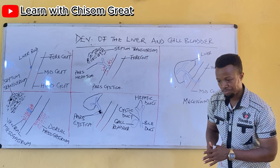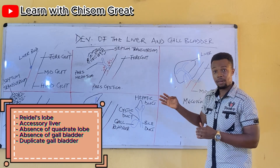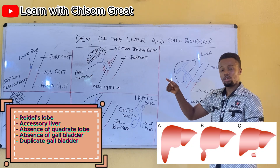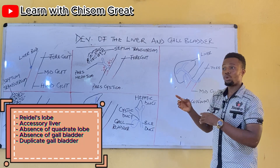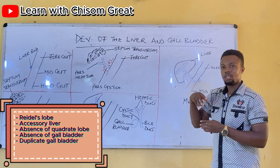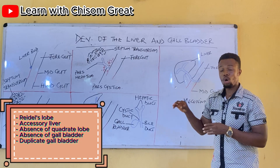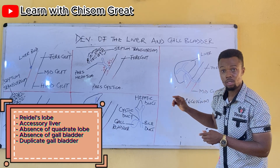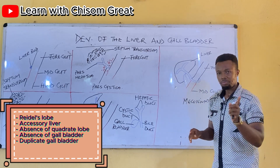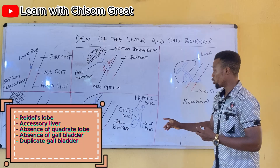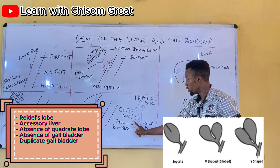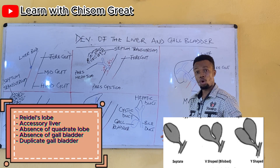Coming to the clinical aspects, we have what is called Riedel's liver, which is a protrusion or extension of the right lobe. We also have an accessory liver found in the falciform ligament. Then we also have the absence of the quadrate lobe, the absence of the gallbladder, and the duplication of the gallbladder.